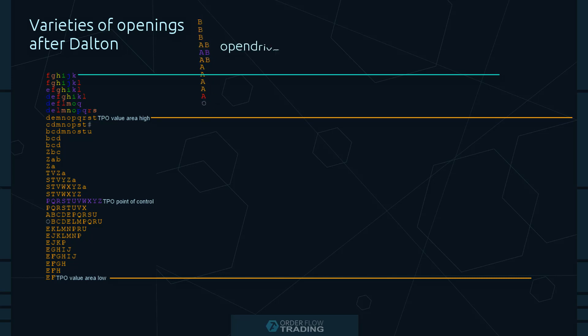Open Drive: The price opens either above or below the previous day's value area and moves during the trading session in a certain direction without significant rollbacks. Trend days develop after such openings. As soon as the trader identifies the open drive, he should stay with the market rather than try to trade against it.